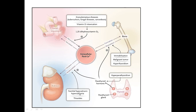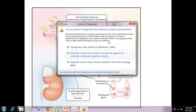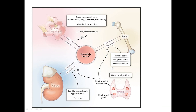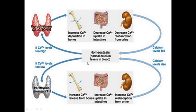An example of hypocalciuric hypercalcemia is familial hypocalciuric hypercalcemia, in which calcium is reabsorbed in excess. In the case of hyperparathyroidism, calcium is reabsorbed in both the kidney and bone, affecting hemostasis.